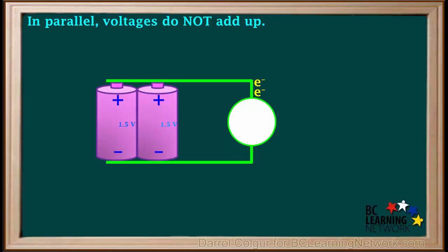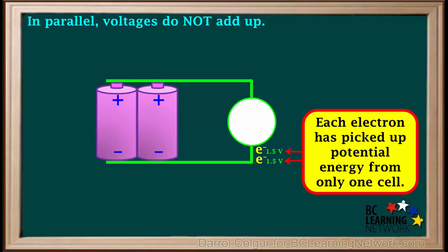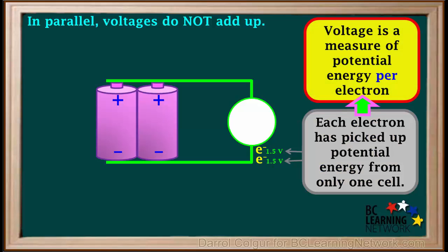To understand why this happens, we consider two cells in parallel and two electrons by the voltmeter. One of the electrons goes through one cell and picks up 1.5 volts of potential energy. And the other electron goes through the other cell and picks up 1.5 volts of potential energy. So each electron has picked up potential energy from only one of the cells — neither electron goes through both cells. Since voltage is a measure of potential energy per electron, each electron has picked up only 1.5 volts, so the voltage is still 1.5 volts.